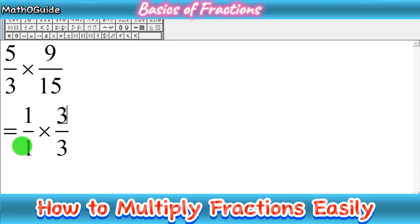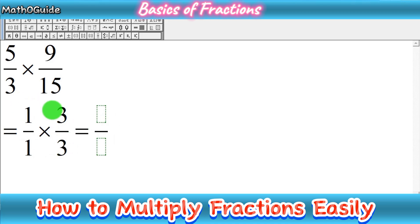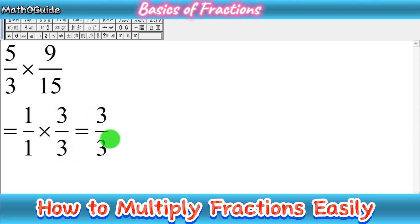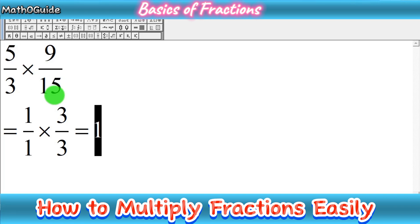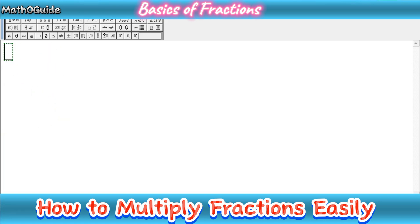Now you multiply numerator with numerator and denominator with denominator. So 1 times 3 gives 3, and 1 times 3 in the denominator is also 3. So we get 3 over 3, and dividing by the same number gives us 1. This is our first type, where you can cancel out both pairs of cross numbers.